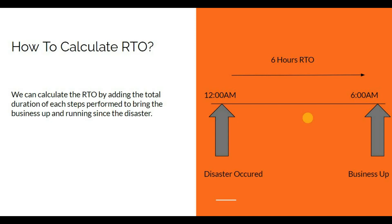Whatever steps you perform to bring up the server since the disaster, and whatever time is consumed by those steps, is called RTO. Here, six hours is the RTO. Sometimes it may take 12 hours. If the data or the business is very critical, RTO can also be as low as five minutes or 15 minutes through an automation process.